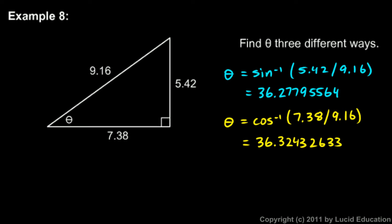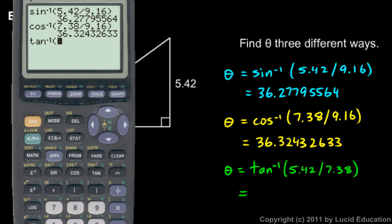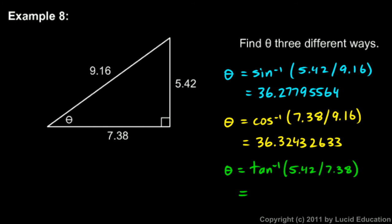Let's look at the inverse tangent also. The tangent of angle theta is opposite over adjacent, so the tangent of theta is 5.42 over 7.38. So theta will be the inverse tangent of 5.42 divided by 7.38. On the calculator, we get again 36 point something, but it's not exactly the same: 36.29420582.